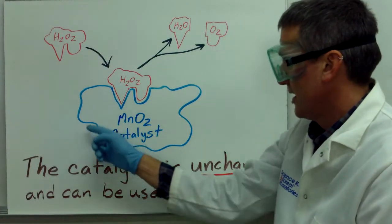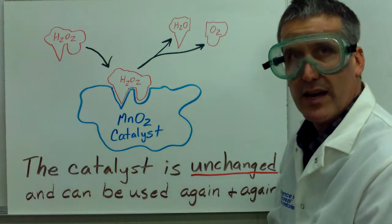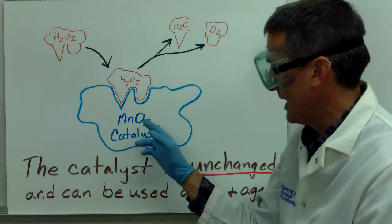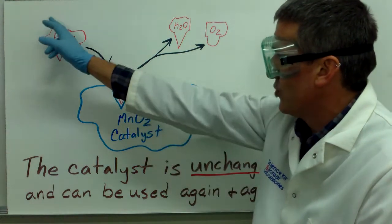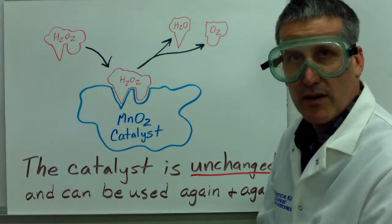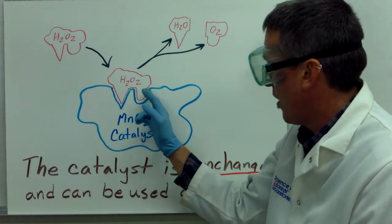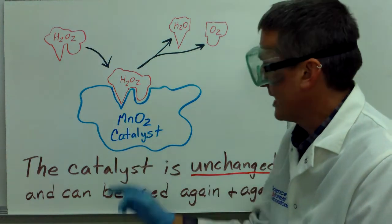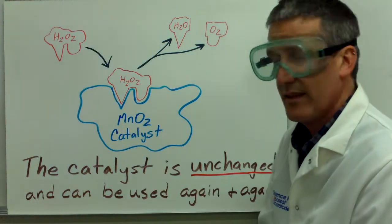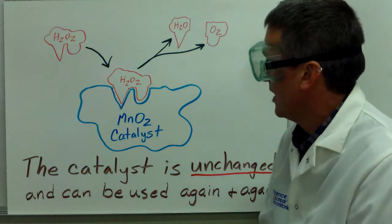So, here we have the blue part of this diagram represents the catalyst, the manganese dioxide. And I've drawn another molecule up here to represent the hydrogen peroxide. Notice how there's a part of this catalyst, manganese dioxide, that actually fits with the hydrogen peroxide.